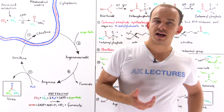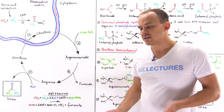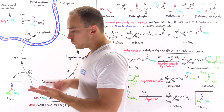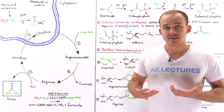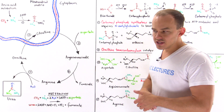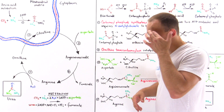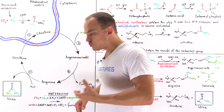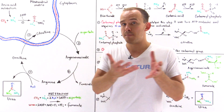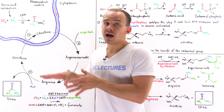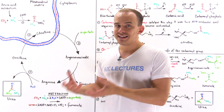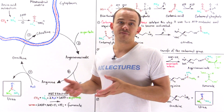Let's discuss the urea cycle. Where does it take place and why? The urea cycle occurs predominantly in hepatocytes — liver cells — and to a smaller extent in the kidneys. It gives us a way to transform a toxic byproduct of amino acid metabolism, namely ammonia, into a less toxic form, urea, that can then be transported to the kidneys and excreted via urine.